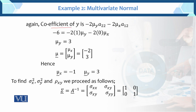Again for the coefficient of y, its value is equal to 6. So minus 2 times A(2,2) times mu_y, with A(2,2) equal to 1. Since mu_x times A(1,2) equals 0, we cancel those minus terms. So 6 divided by 2 equals 3, giving mu of y equal to 3. Therefore the mean vector is (-2, 3).